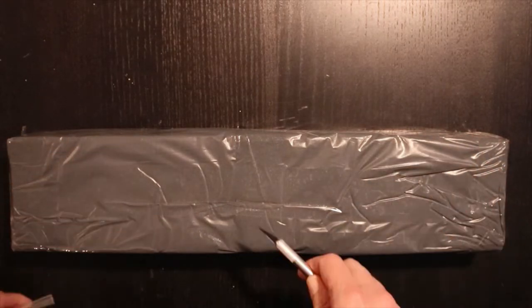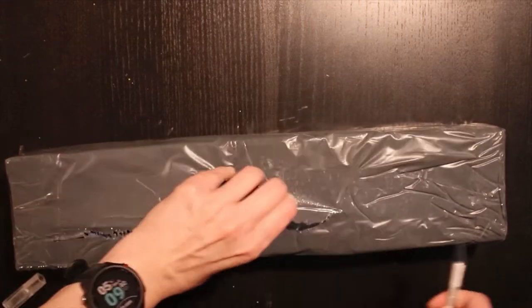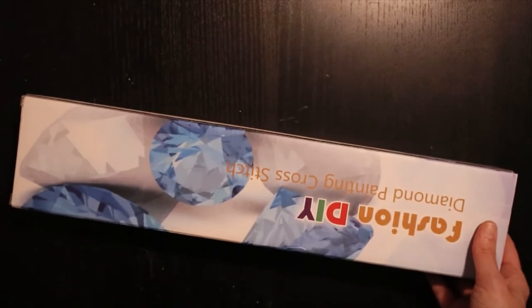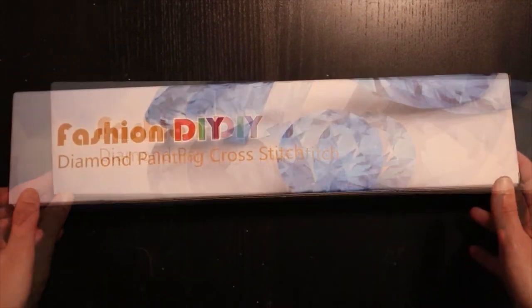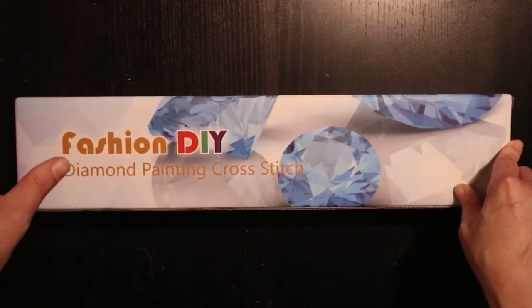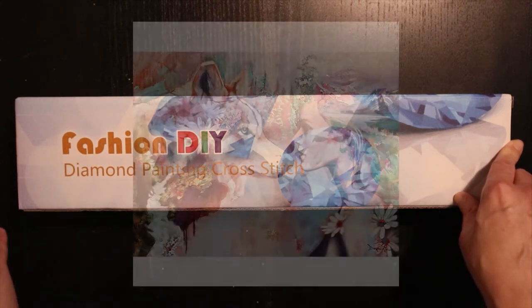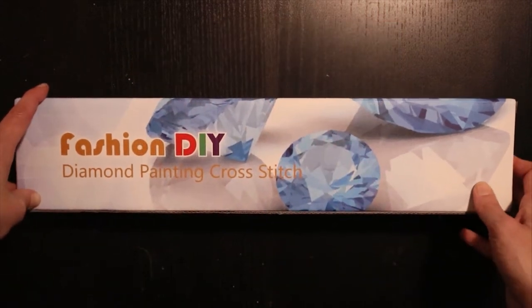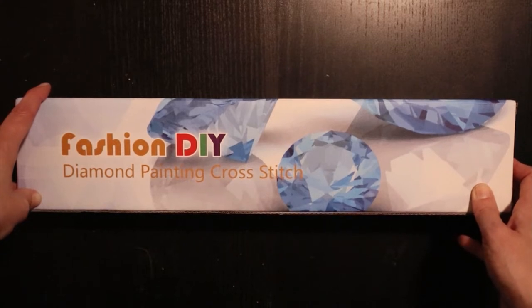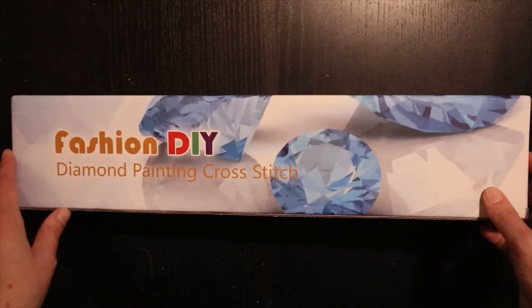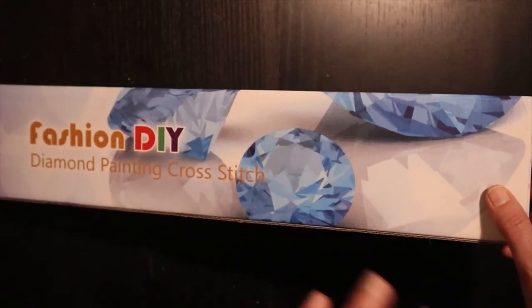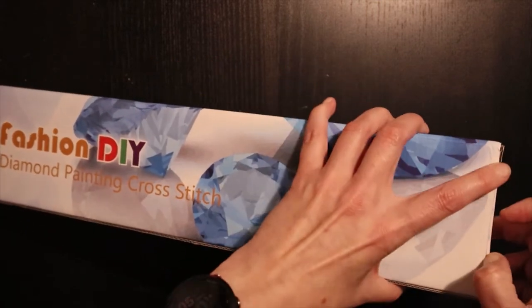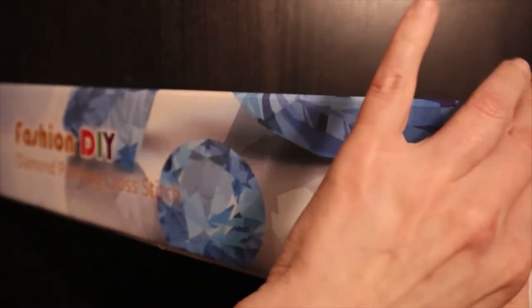But let's get into this thing. So this is from the company where I ordered my first square diamond painting, the one with the woman and the wolf, the one with all the popping drills. Yeah, I wanted to give them a second chance and I wanted to check out how their round drills were. So I found this picture and the moose is my absolute favorite Swedish wild animal, so I'm really looking forward to see how this one looks. I'm excited of how it's gonna look.